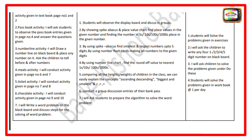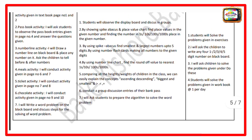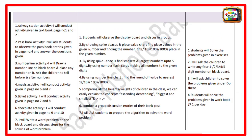I will write a word problem on the blackboard and discuss the steps for solving it. Students will observe the display board and discuss in groups. By showing the spike abacus and place value chart, students find place values in given numbers, including ones, tens, hundreds, and thousands. Using spike abacus, students find smallest and largest numbers up to five digits. Using number flashcards, students make all possible numbers from given digits. Using a number line chart, students find the rounded value to the nearest ones, tens, hundreds, and thousands. Comparing heights and weights of children in the class helps explain ascending, descending, biggest, smallest, less than, greater than, and equal to. Using group discussion of passbook entries, students explore bank passbook concepts. I will ask students to prepare an algorithm to solve word problems.